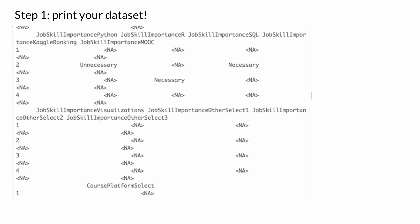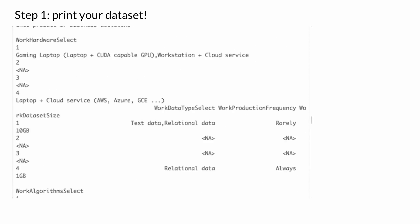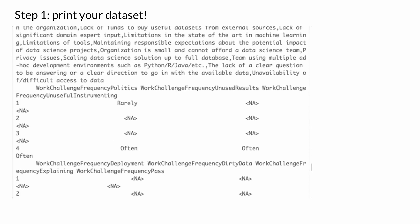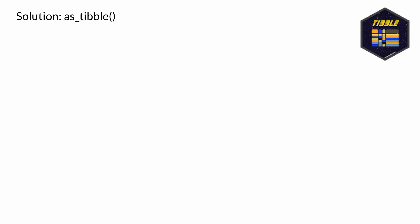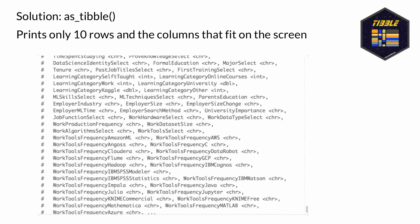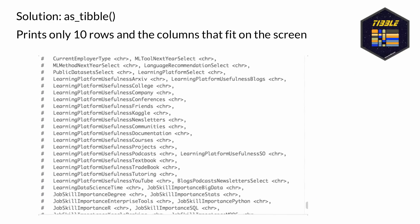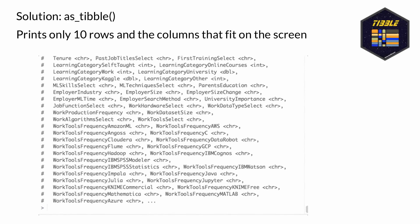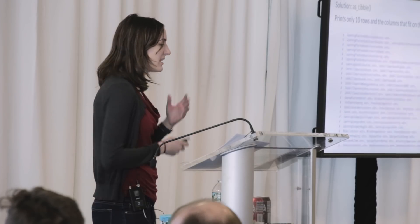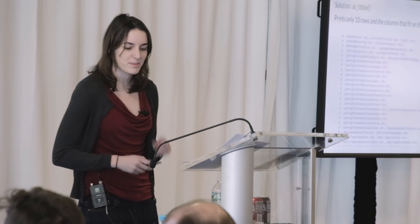First, if you just type the name of your data set after importing it into your console, who's had it just take over the whole thing? You have so many columns printing out and it's really not a useful way to view your data. The solution is to use the function as_tibble from the tibble package. Tibbles are modern data frames that change a few behaviors — one great one is they only print the first 10 rows and the columns that fit on the screen, so you never have to worry about that never-ending console screen again.